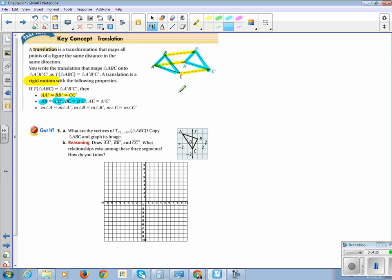And then all the angle measures, angle A and angle A prime, angle B, angle B prime, and angle C and angle C prime are all the same as in the image as it was in the pre-image.